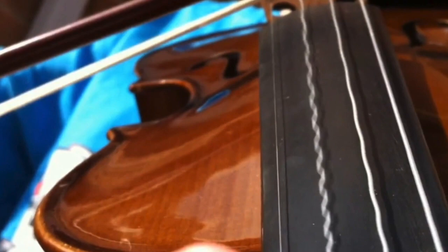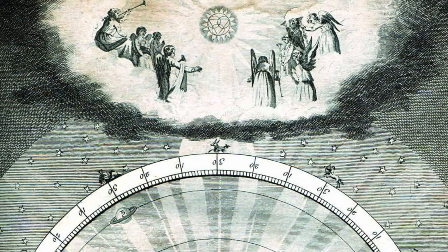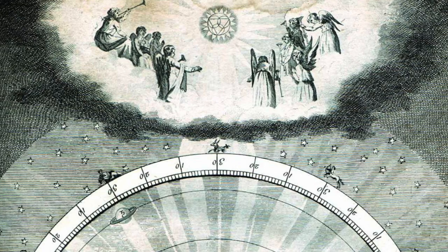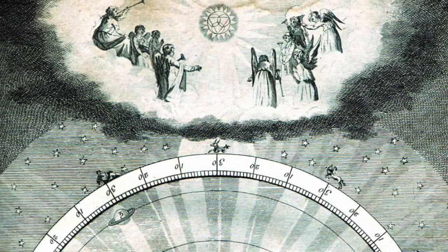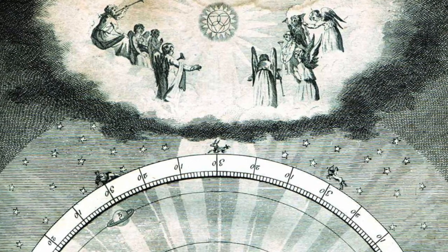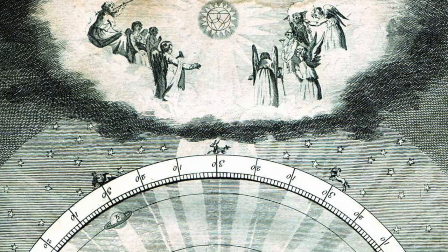Not satisfied with a mere earthly connection between maths and music, Pythagoras projected the link into the heavens. In a theory that became known as the Harmony of the Spheres, he taught that the sun, moon, and planets each give off a unique tone as they move around their orbits.